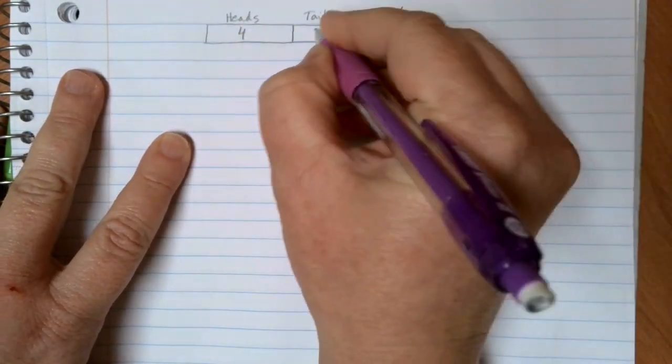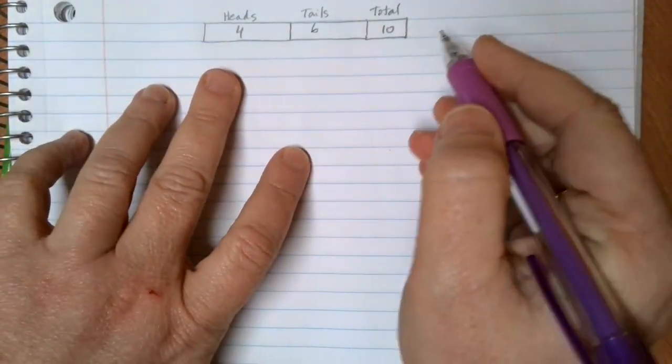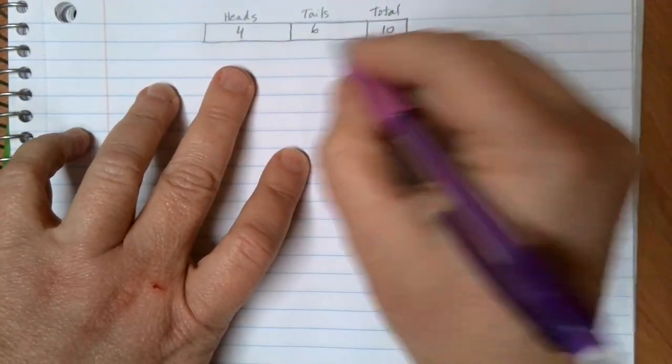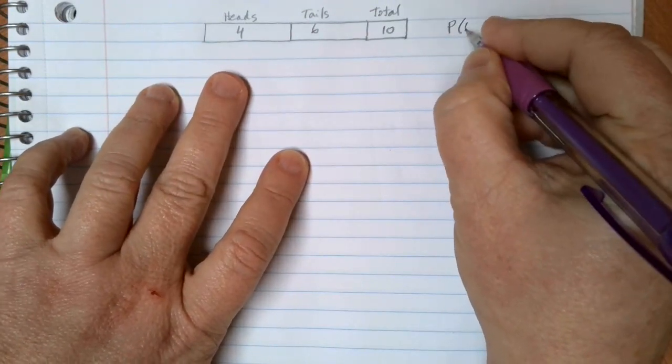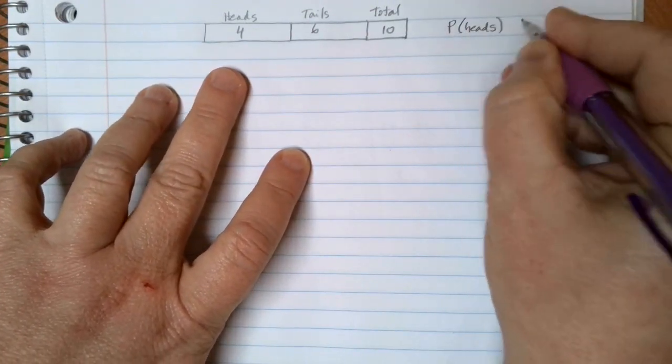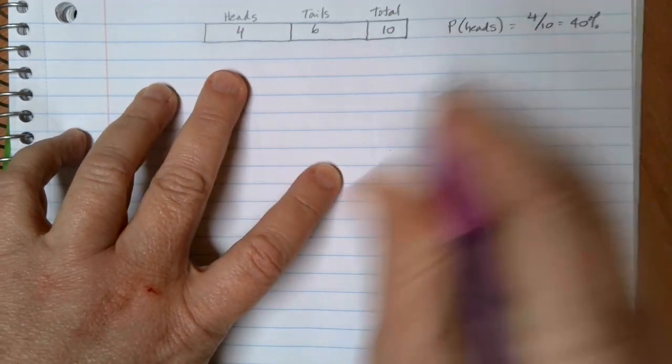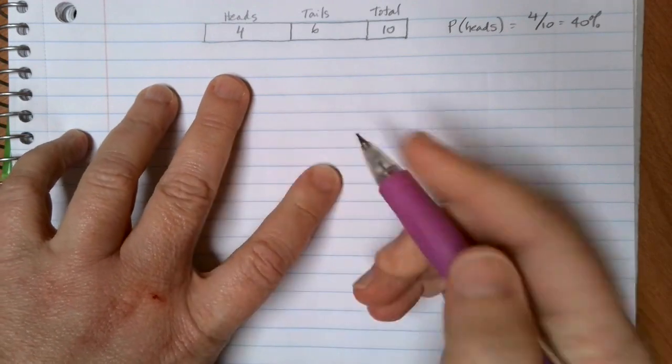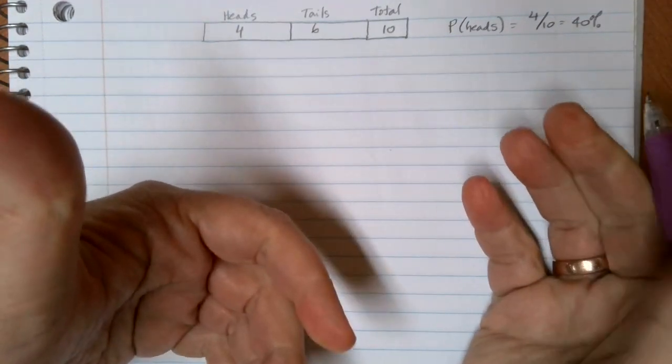And maybe suppose I got four heads and six tails. That seems reasonable that that could happen. Now according to this experiment that I have going on right here, the probability of getting heads would be four out of the ten tries, which is about 40 percent. Well that sounds kind of weird because if I flip a coin it seems like the probability of getting heads should be 50 percent.